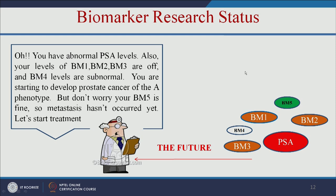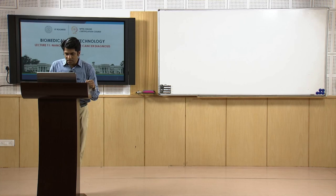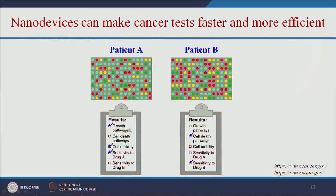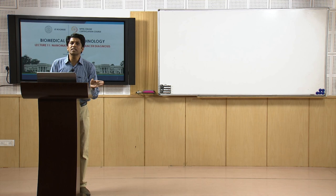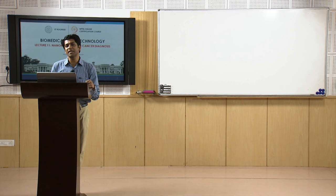Nano devices can make cancer tests faster and more efficient. For patient A, the growth pathways are okay, cell mobility is okay, and he is sensitive to drug A. For patient B, he is sensitive to drug B. Even though both have prostate cancer, they express different biomarkers, so we can give drugs specific to each patient's need — that is personalized medicine.